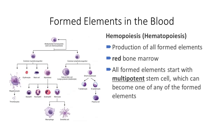Now let's look at the formed elements. We talked about plasma, the fluid nature, how much water, the proteins. When we look at the formed elements — white blood cells, red blood cells, and platelets — we're going to produce these largely from your bone marrow through a process called hemopoiesis, or hematopoiesis. This covers all of the formed elements.